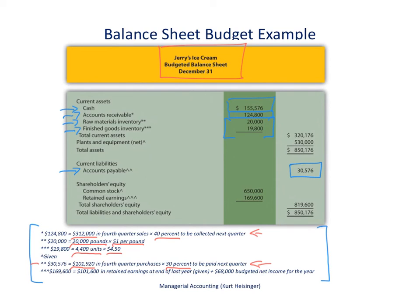Lastly, common stock of $650,000 was a given as part of this example. Retained earnings is calculated by taking the given retained earnings balance at the end of last year and adding our budgeted net income. We're assuming that we were not going to pay any dividends, so it is simply retained earnings at the end of last year plus our expected net income for this coming year. That number is reflected in this retained earnings line item. So that is how we put the budgeted balance sheet together — it comes from all these different budgets for Jerry's Ice Cream, and this is the culmination of all of that work.